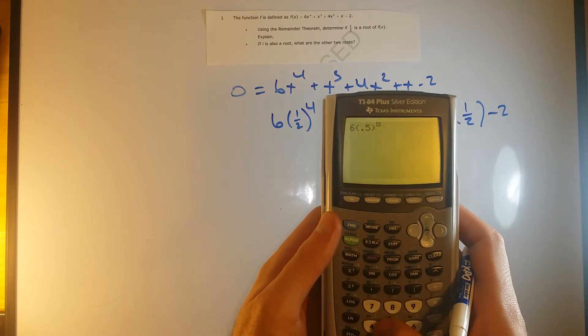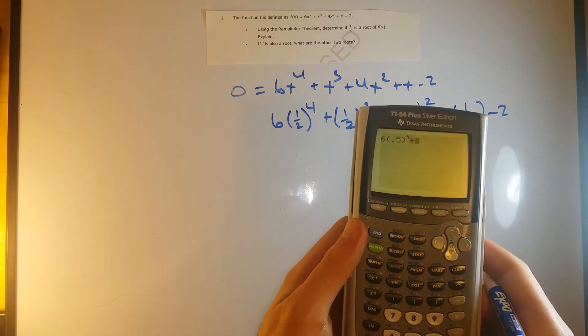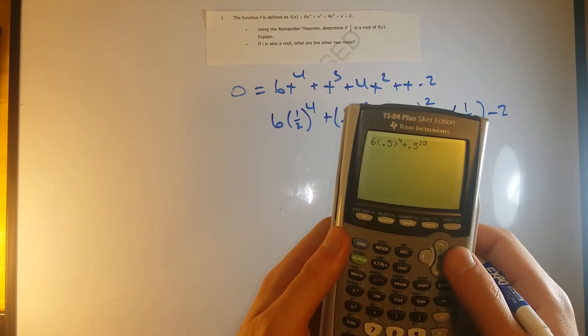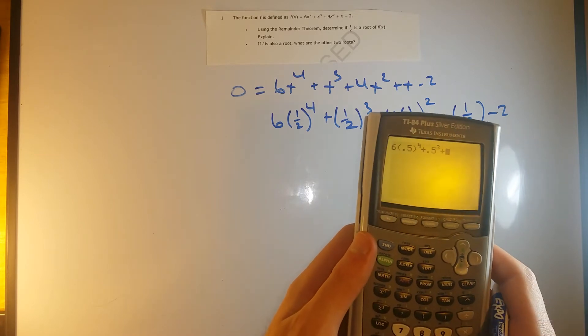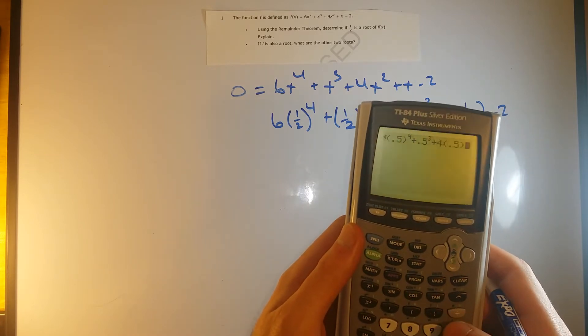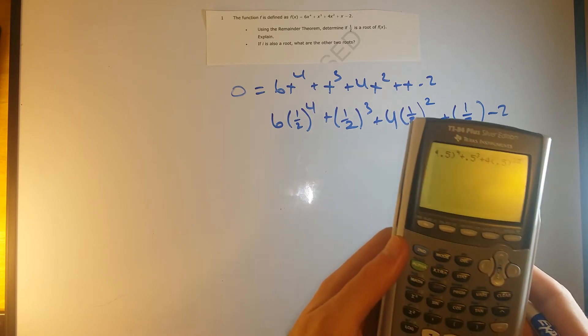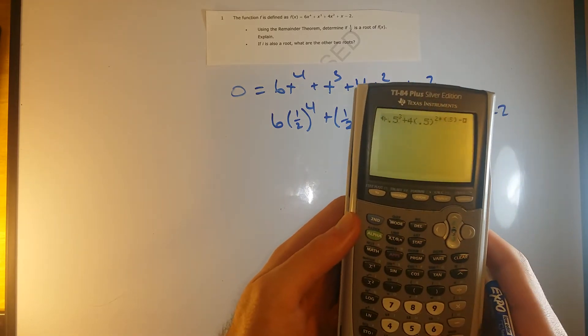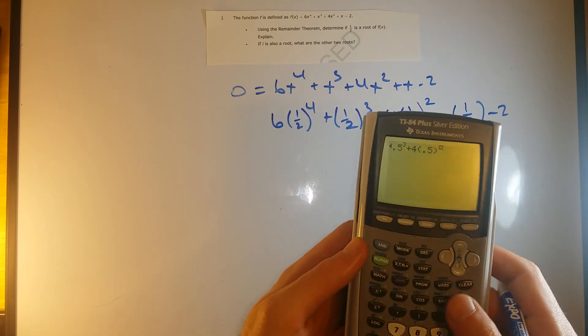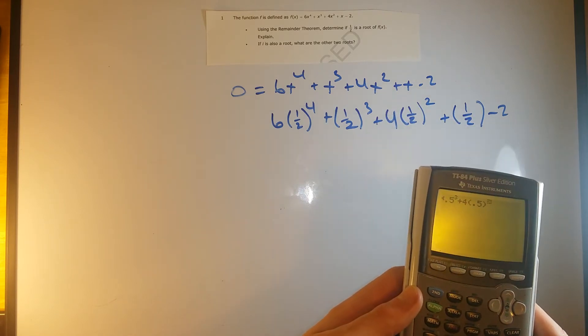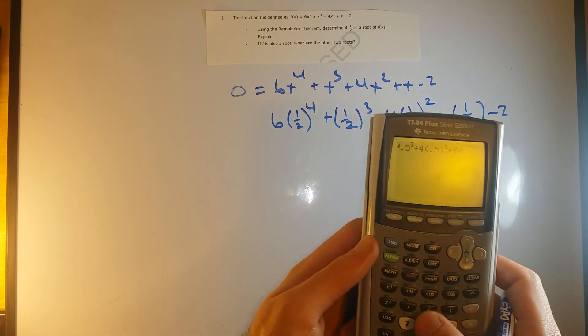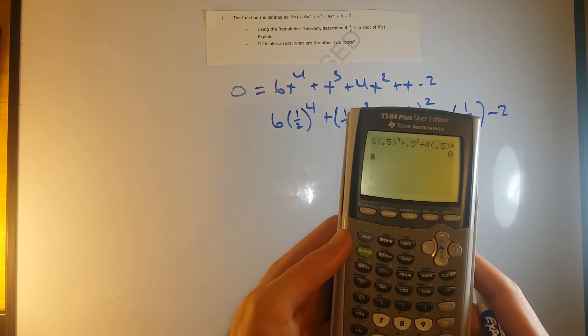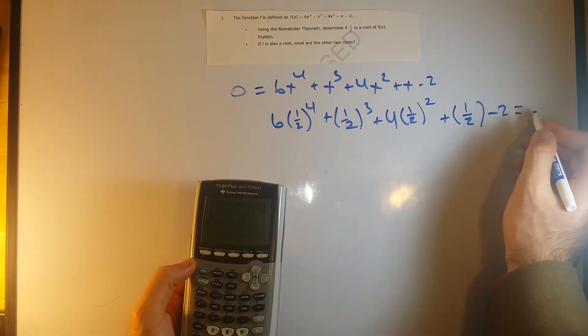So just plugging that in, 6 times 0.5 to the 4th plus 0.5 to the 3rd plus 4 times 0.5 to the 2nd plus 0.5 minus 2, and this indeed equals 0.